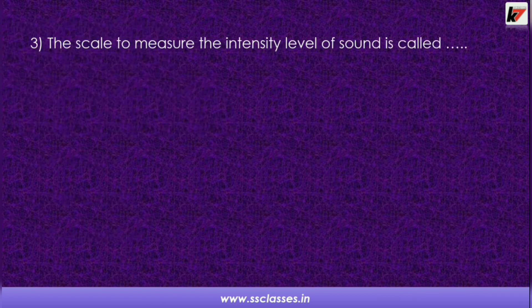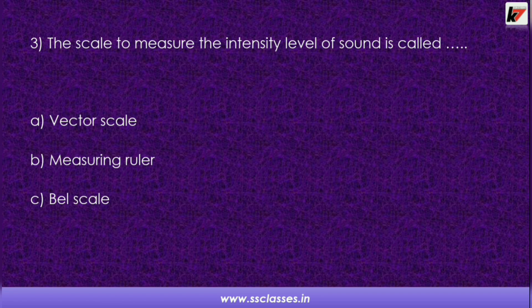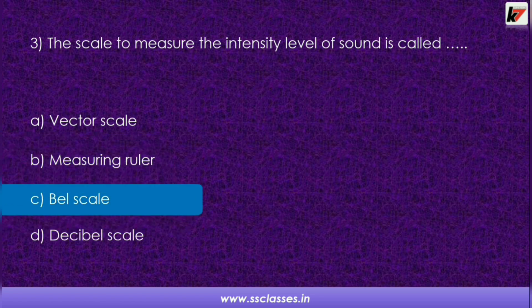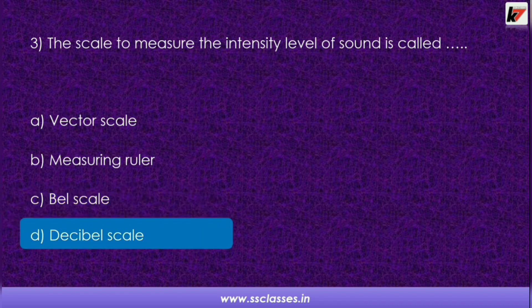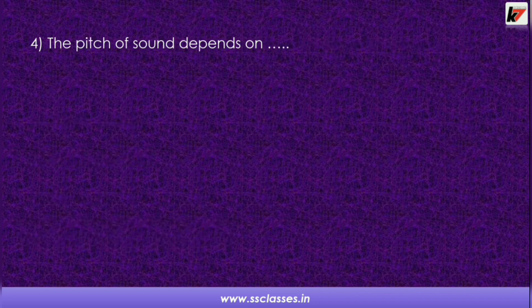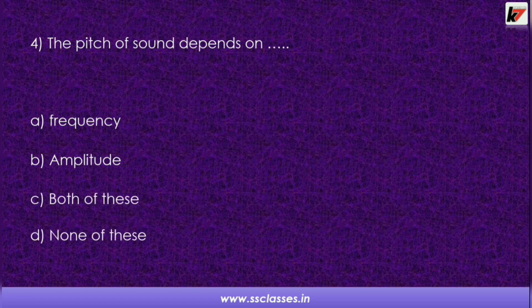Question 3: The scale used to measure the intensity level of sound is called? Options are: vector scale, measuring ruler, bell scale, or decibel scale. The correct answer is decibel scale — intensity of sound is measured in the unit dB. Question 4: The pitch of sound depends on? Options are frequency, amplitude, both, or none. The answer is frequency.